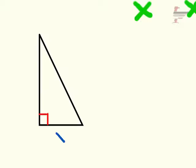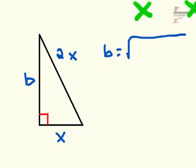We know that this length is going to be x, and this length here is going to be 2x. Using the Pythagorean theorem, we can find that this side is the square root of (2x)² minus x².